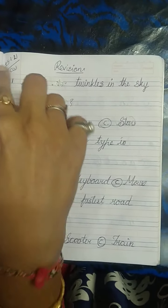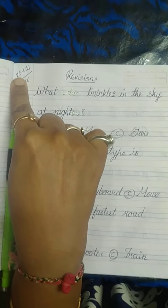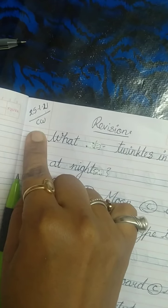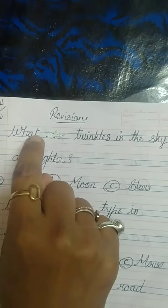So we have to start with revision. Give the date 25-1-2021 CW. Give title, revision, okay?